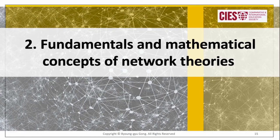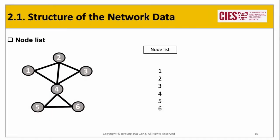Now you've learned what a network is and how different kinds of network structures are represented by the universal elements of vertices and edges. Let's jump into the fundamentals and mathematical concepts of network theories. Understanding the structure of network data is very key to calculating network features using software tools, as network analysis software only allows a certain format of data structure. The most basic data structure is a node list — a vector of vertices in the network. For a network with six vertices, the node list is simply a single column or vector of the nodes.